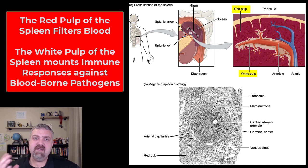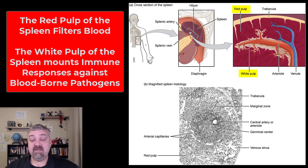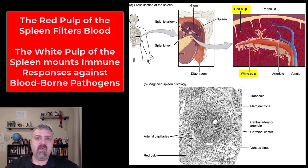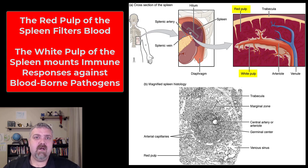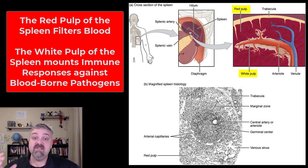So while they're filtering the blood, they are also looking for blood-borne pathogens — pathogens that are going to be right in your bloodstream. So there is some immunity to the red pulp portion of the spleen as well, but the white pulp is going to be full of all your T cells and B cells, the cells involved in the adaptive immune response, the specific immune response.